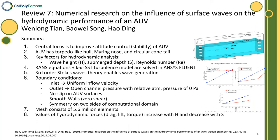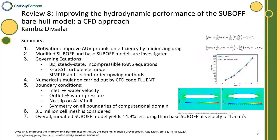The eighth study is motivated by improving AUV propulsion efficiency by minimizing drag. Specifically, modified sub-off and base sub-off models are the subjects of the study. Numerical simulation is conducted via CFD code Fluent, where 3D steady-state incompressible RANS equations and the K-Omega-SST model are solved. Overall, the modified sub-off model produces 14.9% less drag than the base sub-off model.